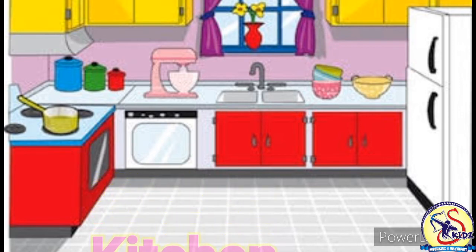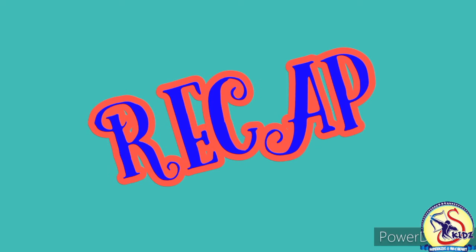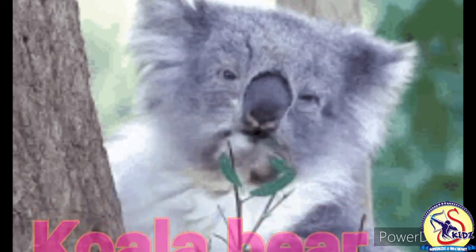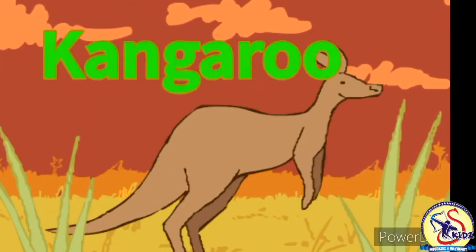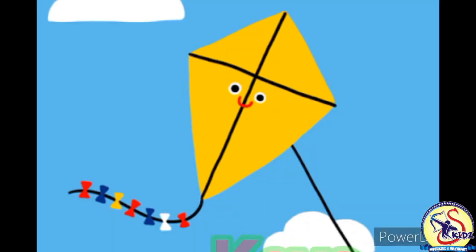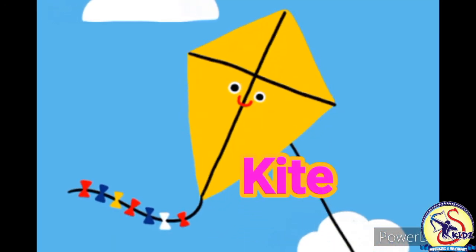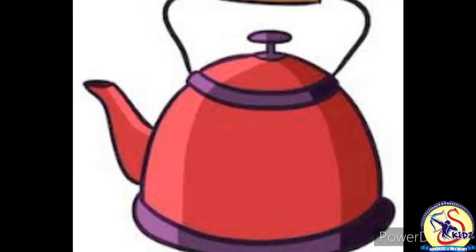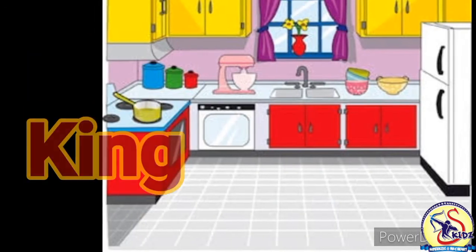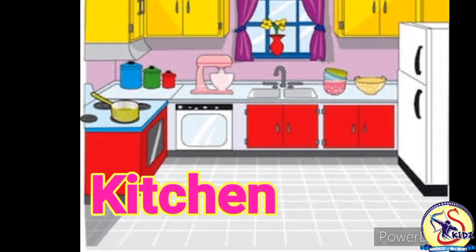So kids, let's do the recap once again. K K — koala bear. K K — kangaroo. K K — keys. K K — kite. K K — kettle. K K — king. K K — kitchen.